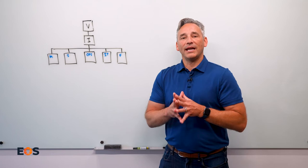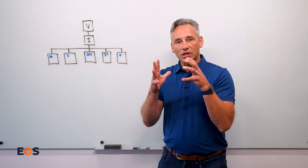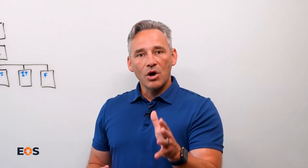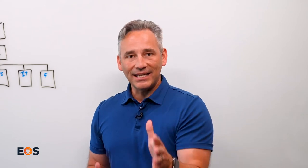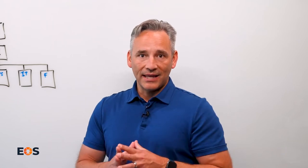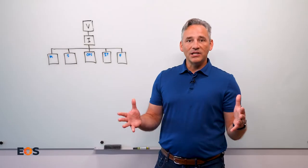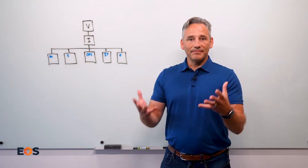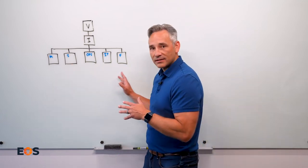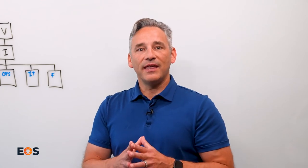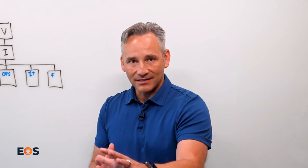Number two: the accountability chart will create absolute clarity in your organization. Why? Because you know who's accountable for any issue that comes up. There's only one person that owns the issue. In an ideal world, it should go like this: an issue comes up, you know who owns it, that person says they've got it, and they go solve it. The end.